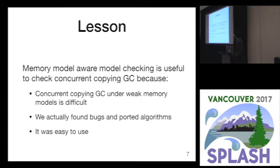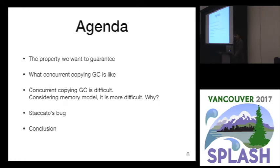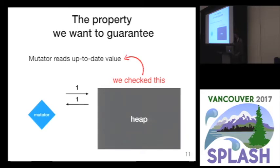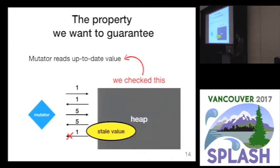And it was easy to use. The property we really want to guarantee as a VM implementer is that it provides the correct abstraction of memory — in other words, a mutator reads an up-to-date value. This is the property that we checked. If the mutator writes 1 to a field of an object, it should be able to read the value 1. After the mutator writes 5, it should be able to read 5, rather than a stale value or some strange value.